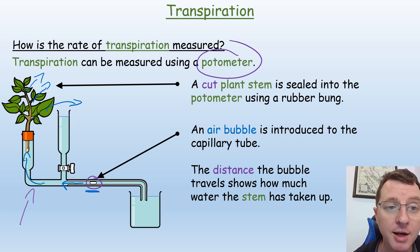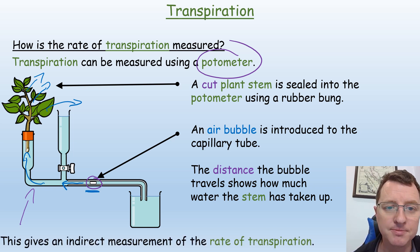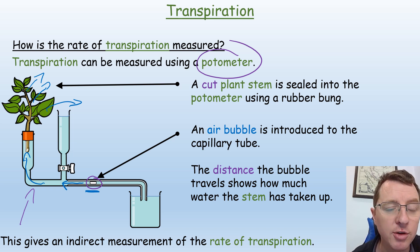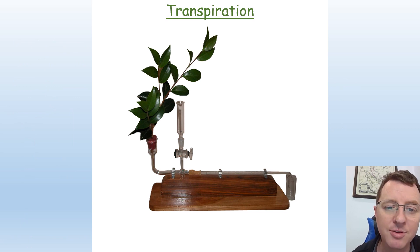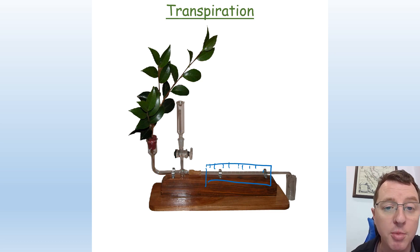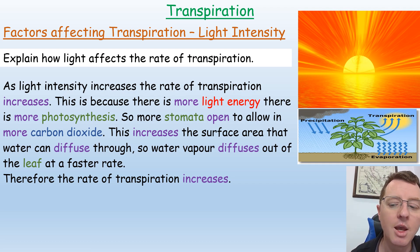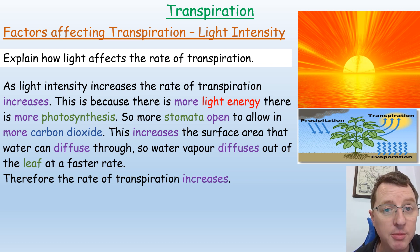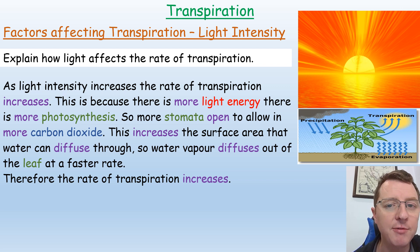It might move very slowly, so you may have to measure how far it moves in 10 minutes and divide that distance by 10 to find your rate per minute. This gives an indirect measurement of the rate of transpiration. With an actual potometer you would normally have a ruler permanently placed behind it so you can measure in millimetres how far the air bubble moves.